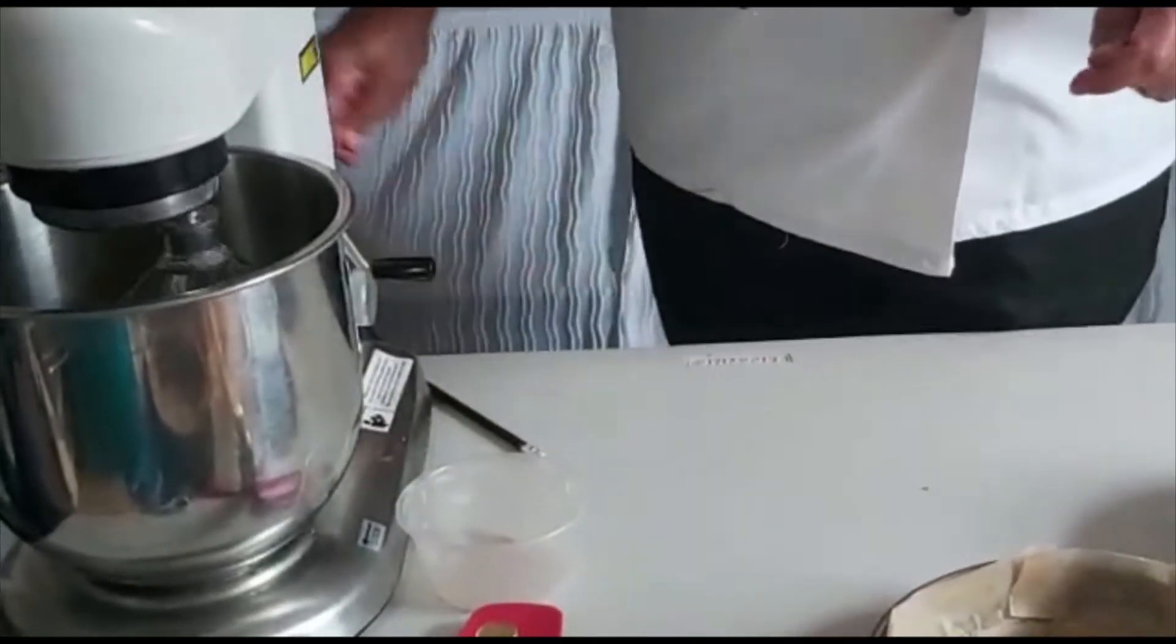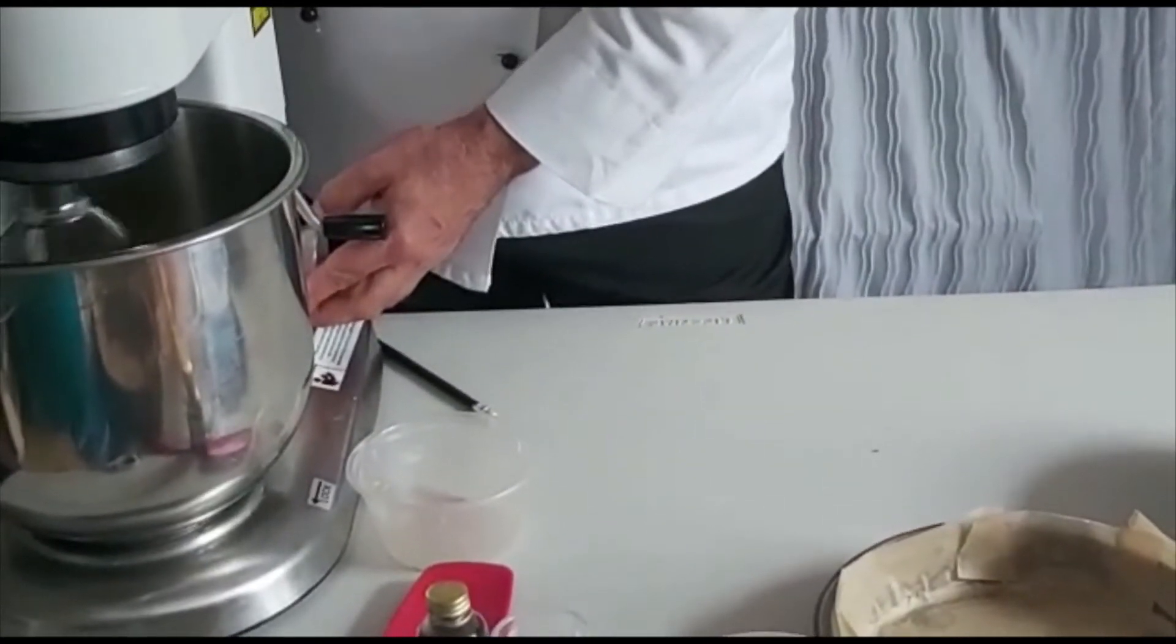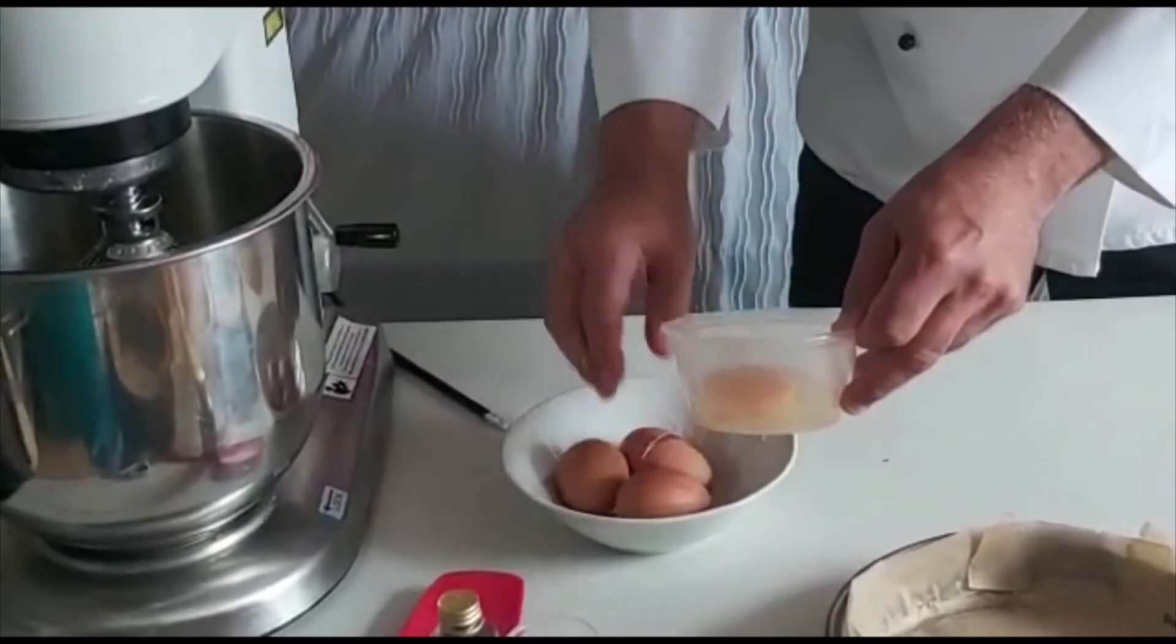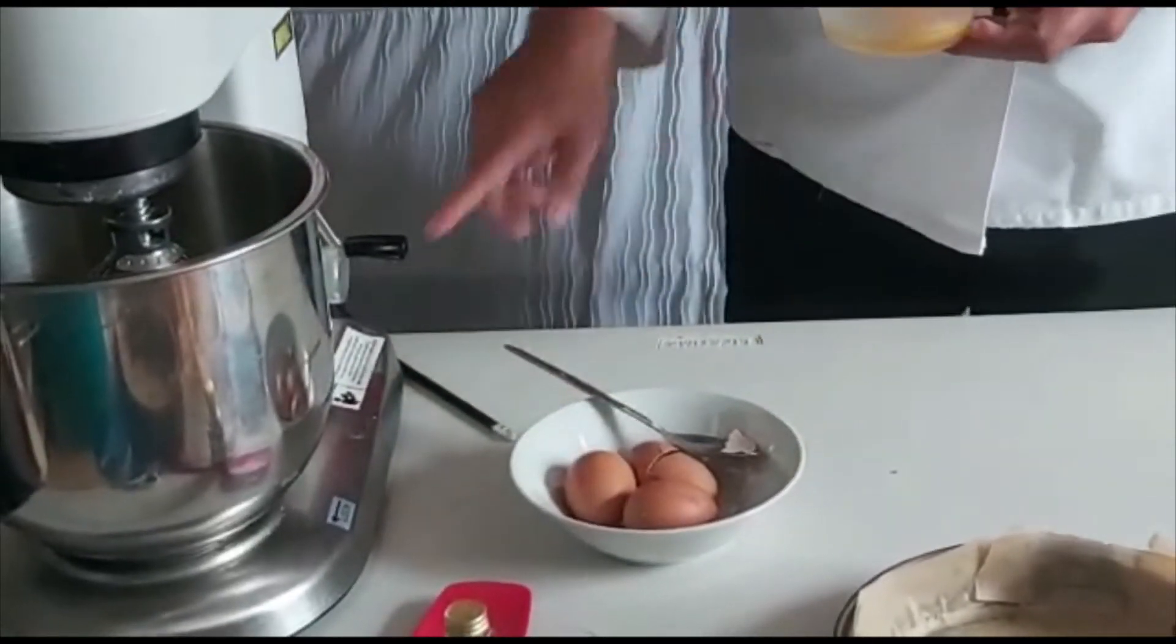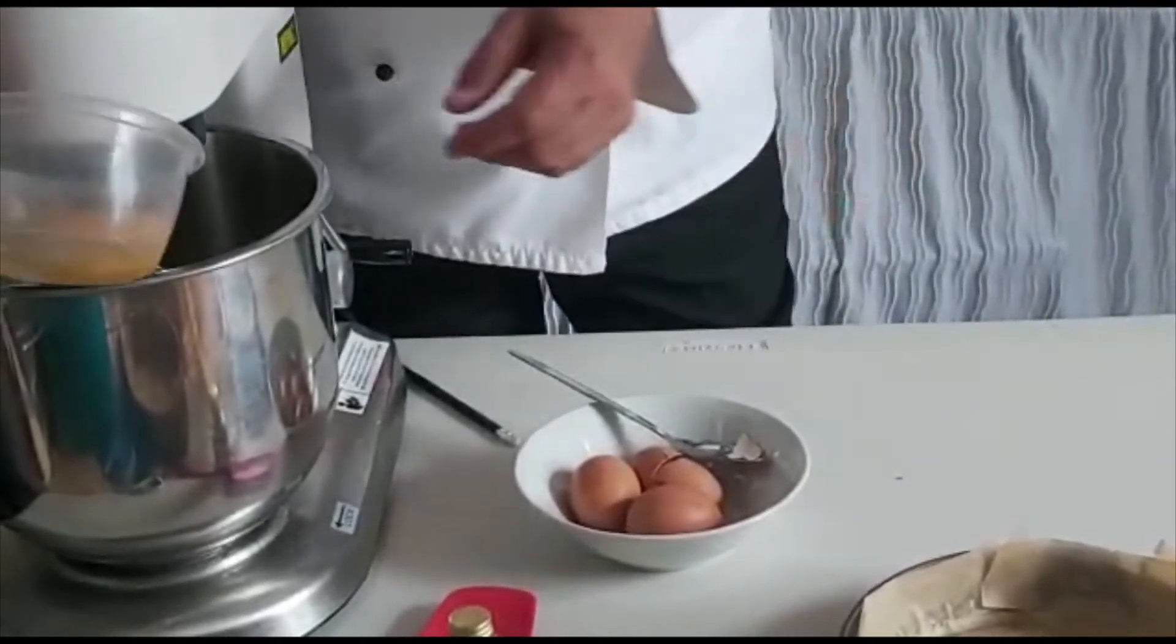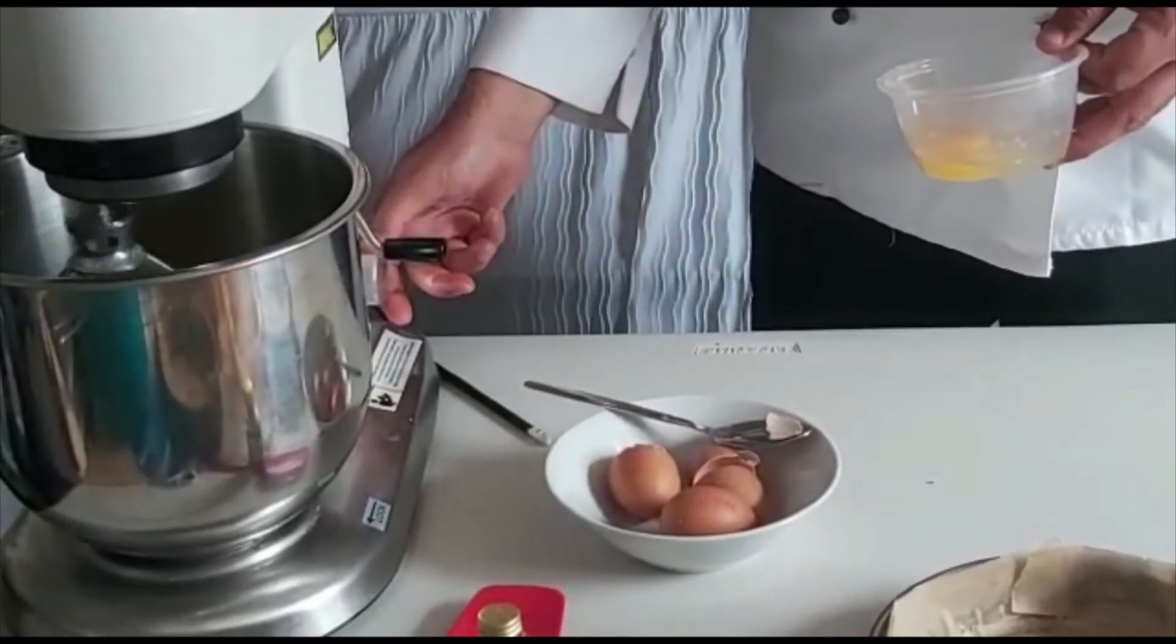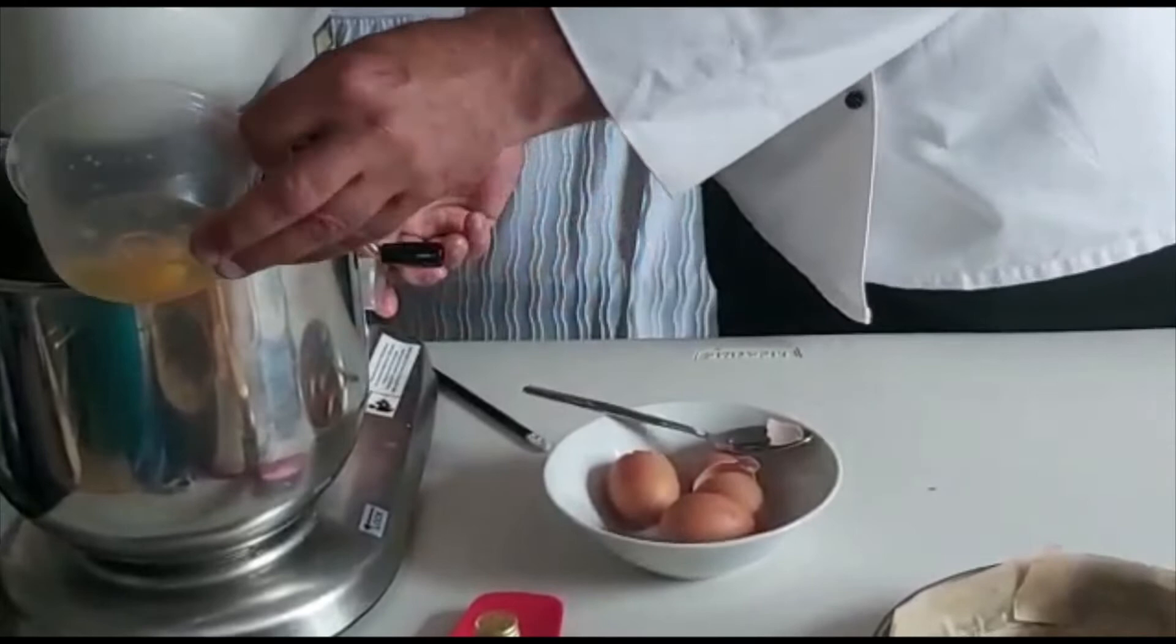There are two lined tins now. My butter and sugar are looking good, it's quite light in color. At this stage I'm going to add the eggs. I'm going to add one at a time. Just make sure there's no shell inside. I'm going to put this back on.